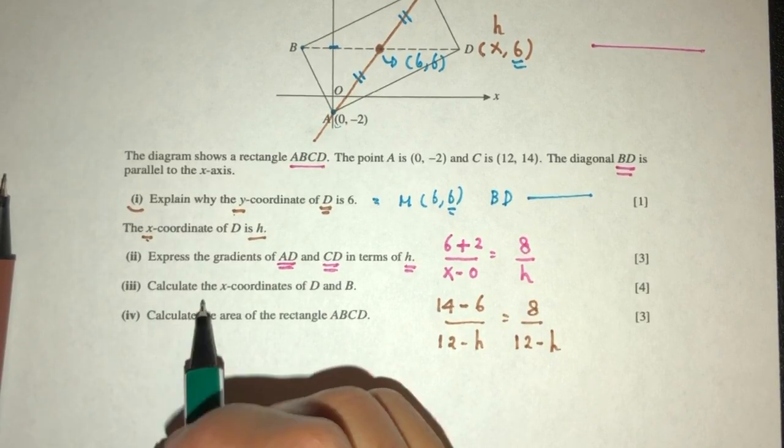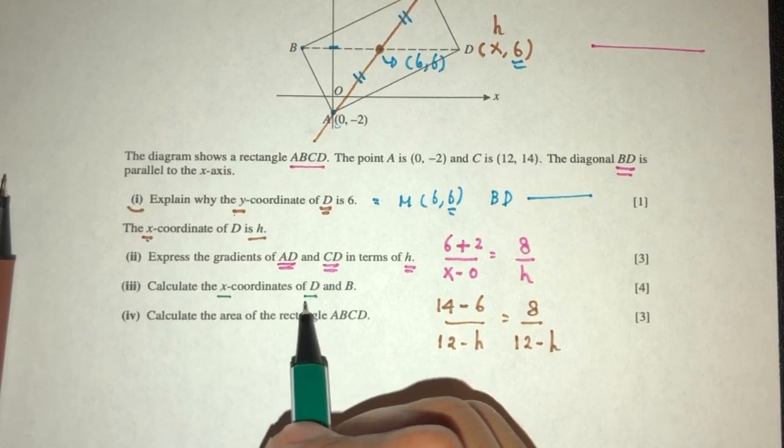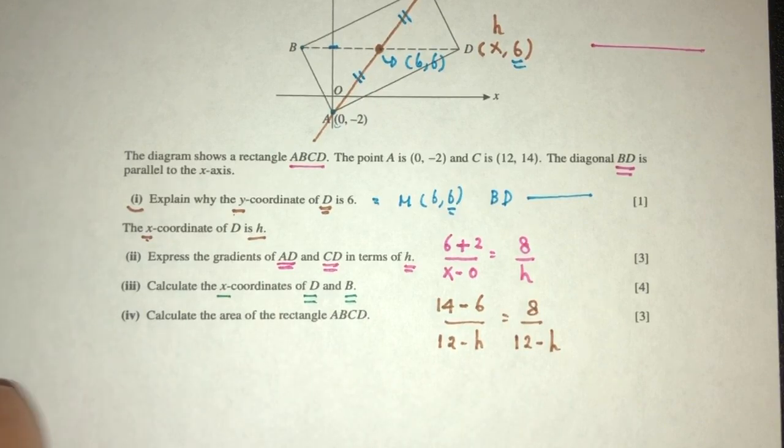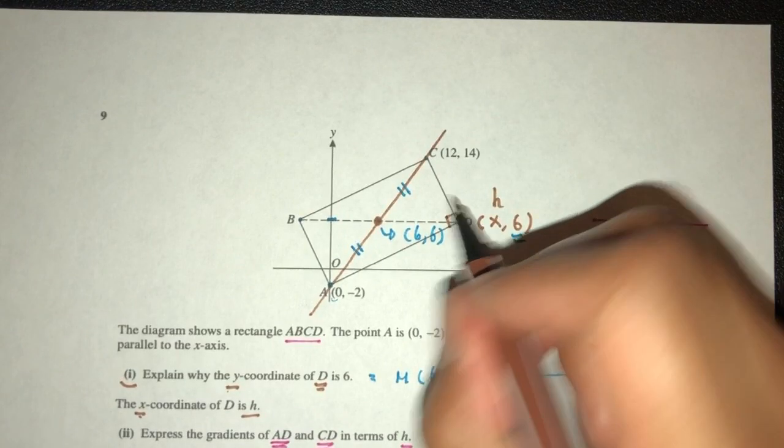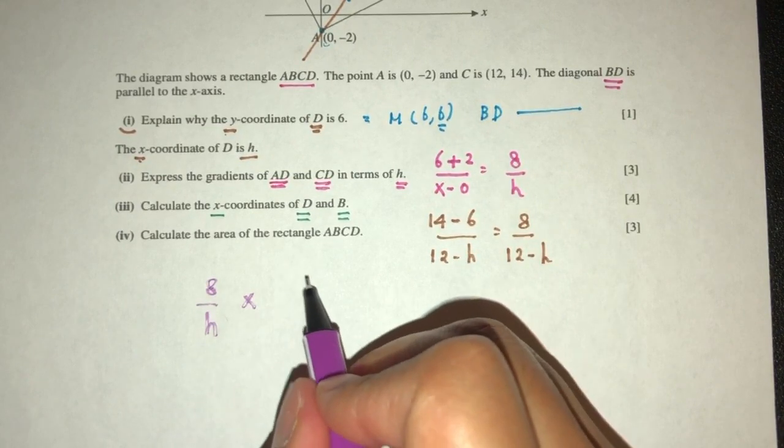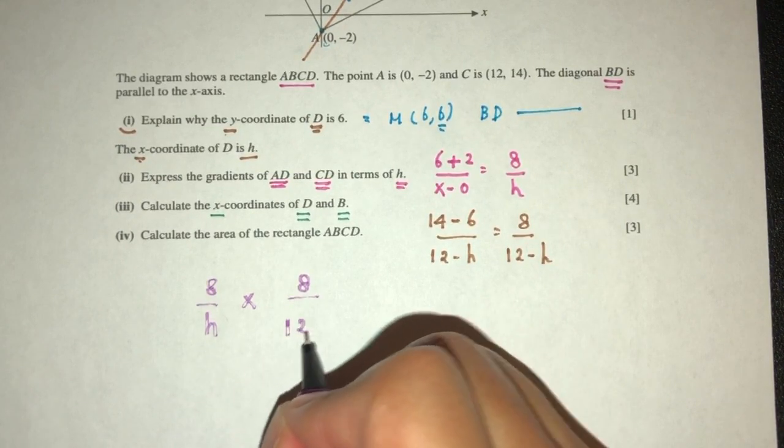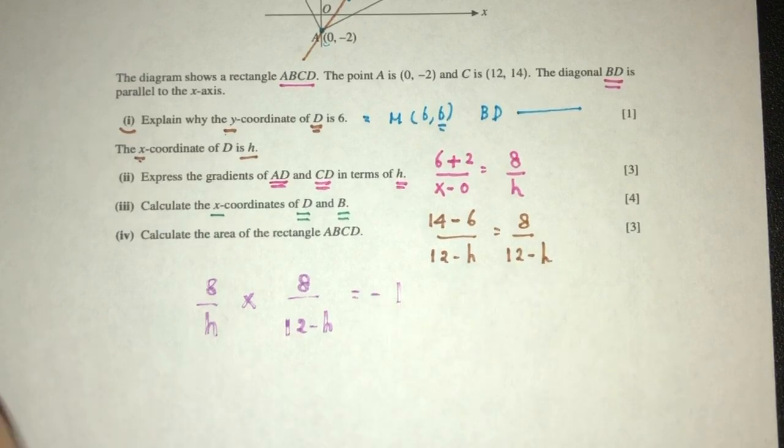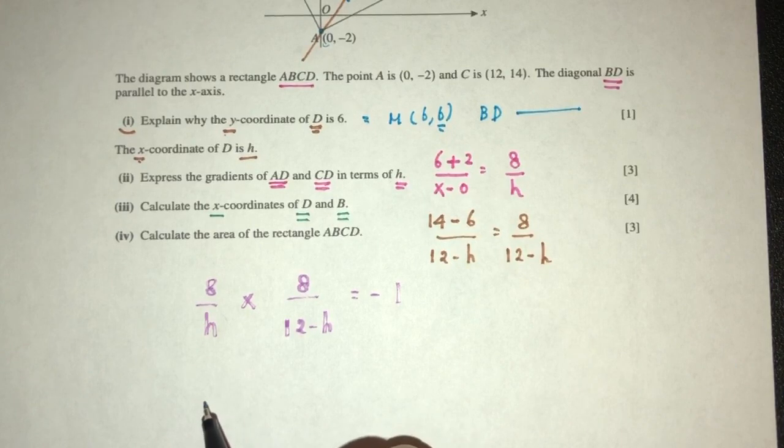Now, for part 3, find the x value of D and B. So why did they ask us to find the gradients? Because we understand they are at 90 degrees to each other. And while that happens, we can form an equation, which is this over h multiplied by the other value have to give you minus 1. Because when you multiply the gradient of perpendicular lines, the value have to be minus 1.